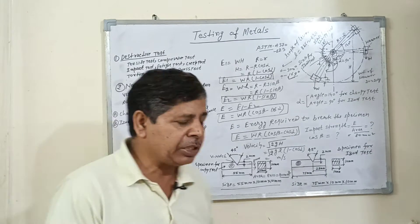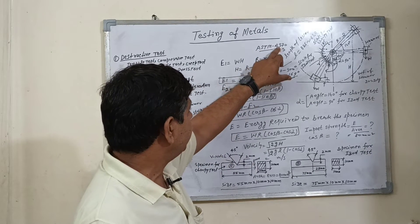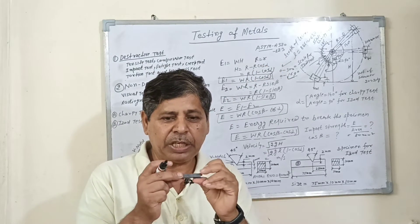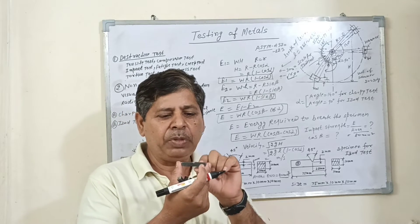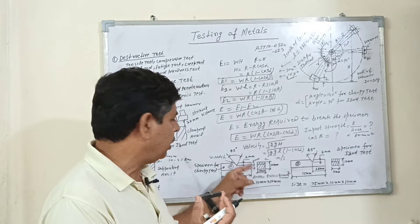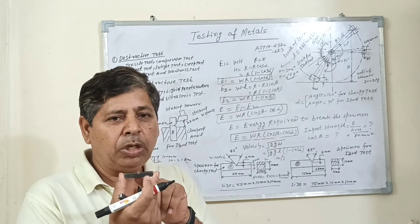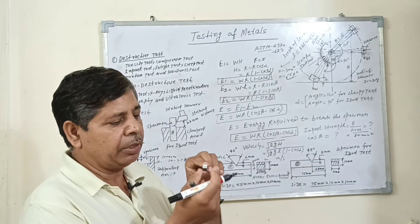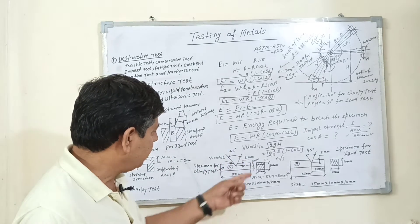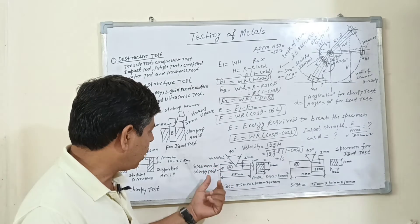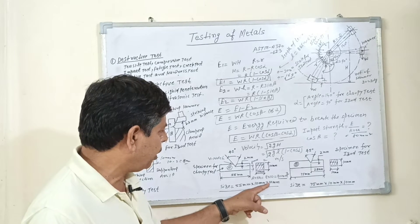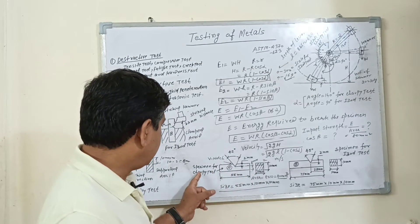First we prepare the sample as per the standard ASTM A370 or E23. This is the sample prepared for a Charpy test. The length of this sample is 55 mm. A V-notch cut is made at the center at a 45-degree angle. The depth of the notch is 2 mm and the cross-section area is 10 by 10 mm. This is the drawing of the Charpy test specimen.